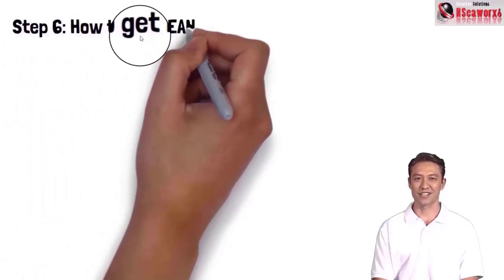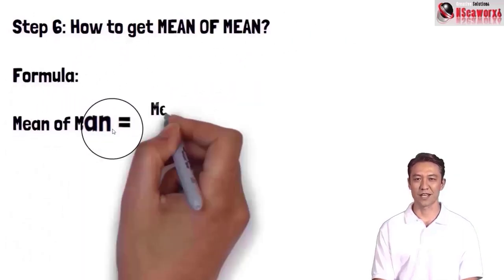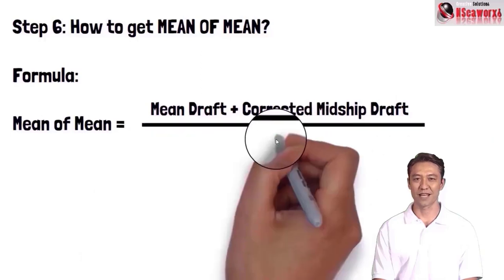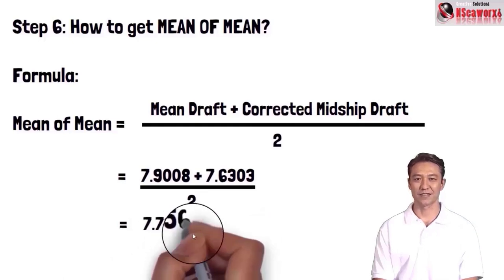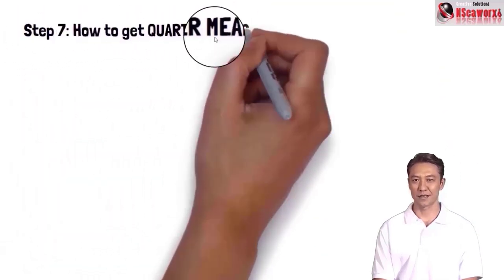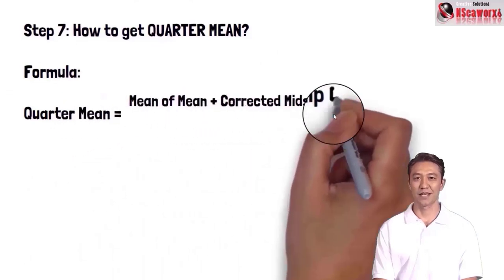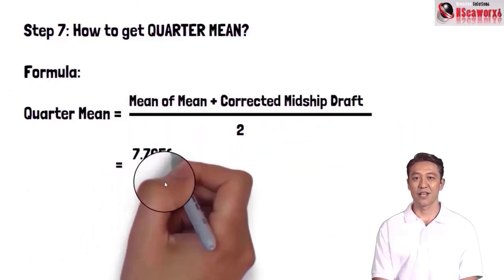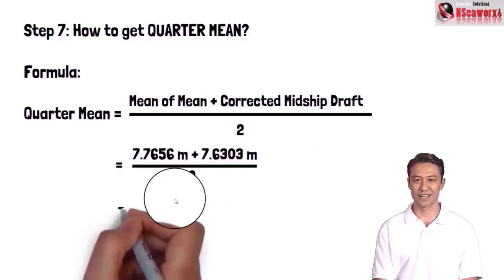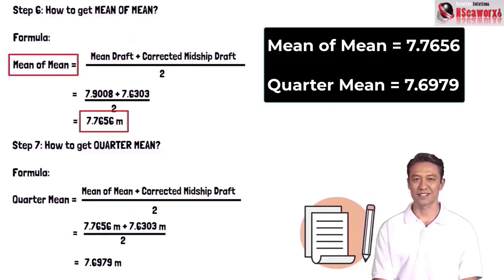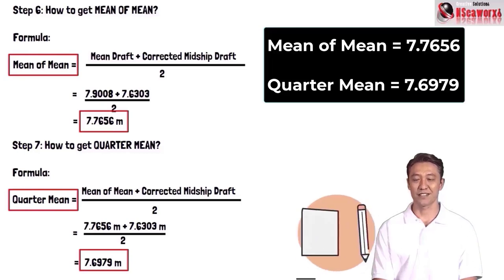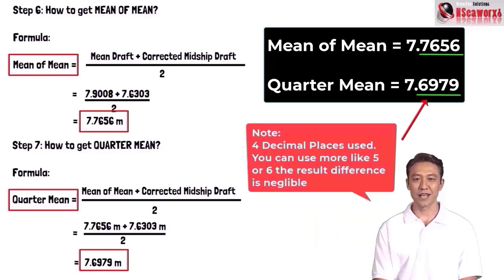Step 6: how to get mean of mean. Mean of mean equals mid forward-aft draft plus corrected midship draft divided by 2 — equals 7.9008 plus 7.6303 divided by 2 — equals 7.7656. Step 7: how to get the quarter mean. Quarter mean equals mean of mean plus corrected midship draft divided by 2 — equals 7.7656 plus 7.6303 divided by 2 — equals 7.6979. Note: I am using four decimal places here; you can use five or more. The difference is negligible.